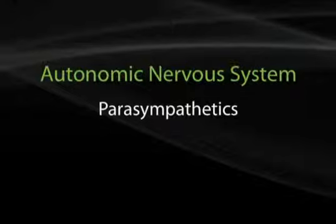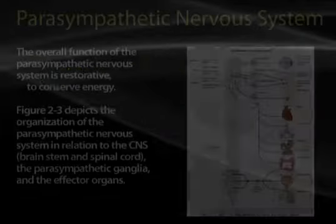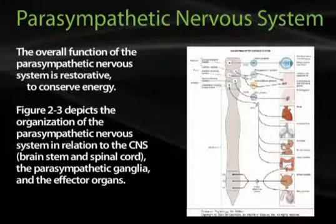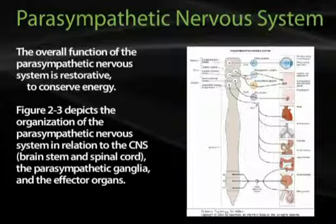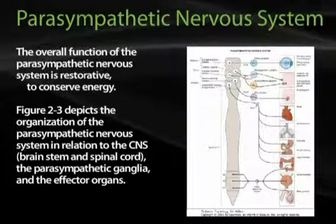Chapter 2, Section 3: Parasympathetic Nervous System. The overall function of the parasympathetic nervous system is restorative, and that is to conserve energy. Figure 2-3, also found on page 52 of your book, depicts the organization of the parasympathetic nervous system in relation to the CNS, the brainstem and spinal cord, the parasympathetic ganglia, and the effector organs.